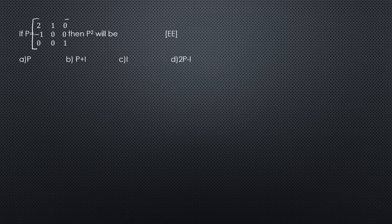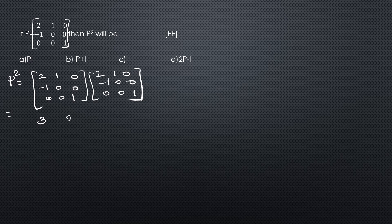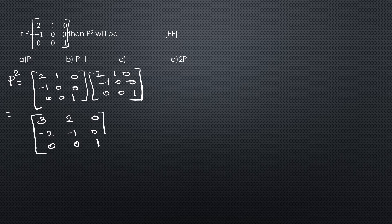For matrix P equals [[2,1,0],[-1,0,0],[0,0,1]], compute P squared. Multiplying P by itself gives P squared equals [[3,2,0],[-2,-1,0],[0,0,1]]. Checking options: P squared does not equal P, and P squared does not equal the identity matrix. Checking P plus I: [[3,1,0],[-1,1,0],[0,0,2]], which does not equal P squared. Checking 2P minus I: [[3,2,0],[-2,-1,0],[0,0,1]], which matches P squared. So P squared equals 2P minus I.